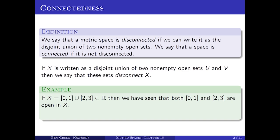Consider the set X contained in R consisting of the closed interval [0,1] union the closed interval [2,3]. We remarked earlier in the course that relative to X, the closed interval [0,1] is actually an open set, even though it's not open in R. And so is the closed interval [2,3]. So I can take those to be my U and V respectively. They're clearly disjoint, their union is the whole of X, and therefore they disconnect X.